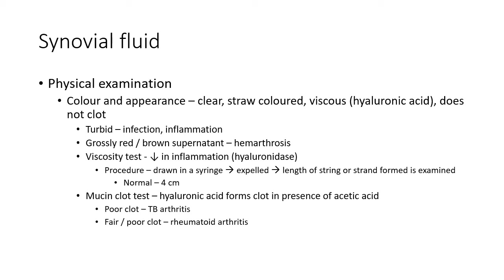The mucin clot test is also performed: hyaluronic acid normally forms a compact clot in the presence of acetic acid. Low concentration of hyaluronic acid does not allow a firm clot to form. A poorly formed fibrin clot is seen in tuberculosis arthritis and other severe inflammatory joint disorders; a fair to poorly formed fibrin clot is seen in rheumatoid arthritis, gout, and pseudogout.